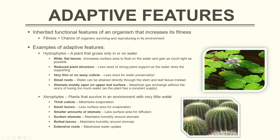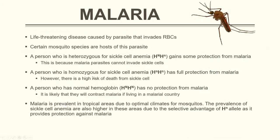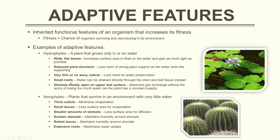There are certain adaptive features we need to look at. Inherited functional features of an organism that increase its fitness are called adaptive features — fitness being the chance of an organism surviving and reproducing in its specified environment. For example, hydrophytes are plants that can grow only in or on water. They have adaptive features like wide flat leaves, reduced plant structure, thin or no waxy cuticles, small roots, and stomata that are mostly open on the upper leaf surface — all of which help the plant adapt to its environment.